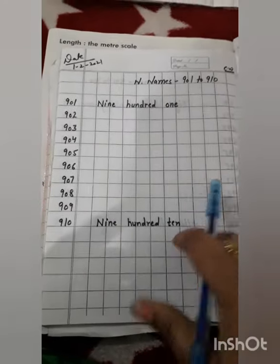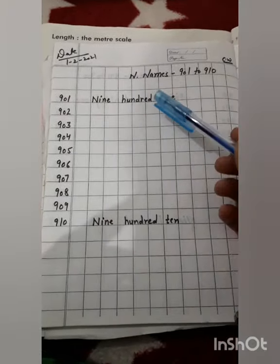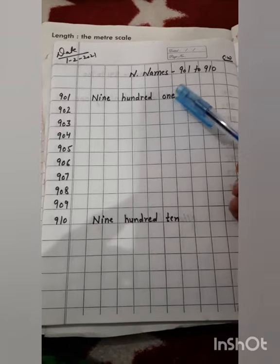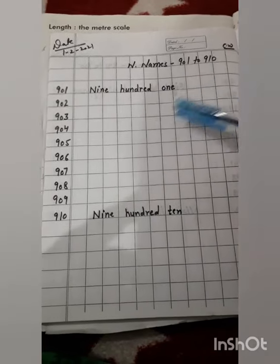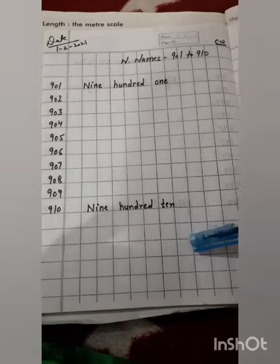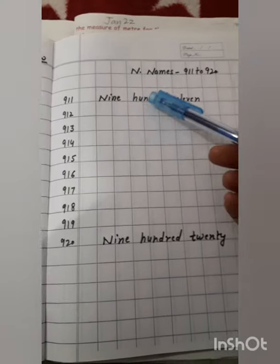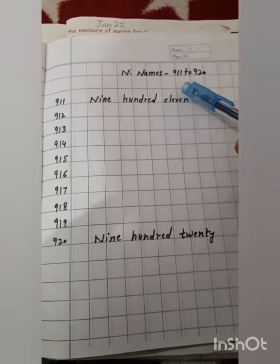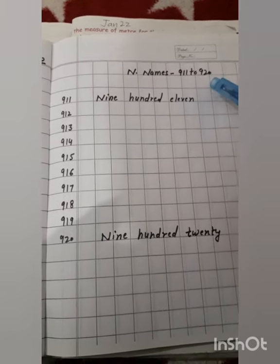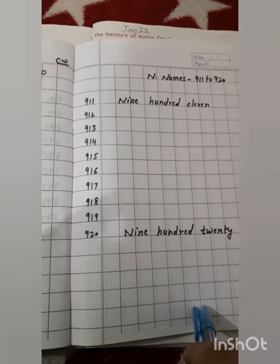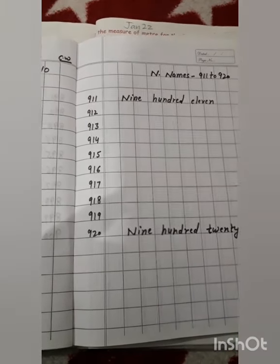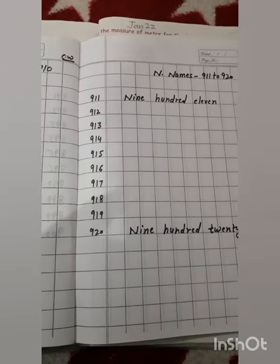Students, you have to do number names from 901 to 910, like this. Do the work neatly. You also have to do number names 911 to 920, like this. Work should be neat and clean. Thank you and have a nice day.